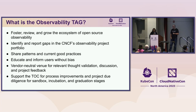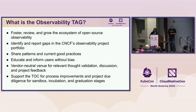We educate and inform users without bias — that is, being vendor-neutral — which is very important for the growth of open source and innovation in the observability ecosystem, especially as observability is a key part of infrastructure development. We provide a vendor-neutral venue for relevant thought validation, discussion, and project feedback — a great place to bounce ideas around distributed systems and engineering towards observability.